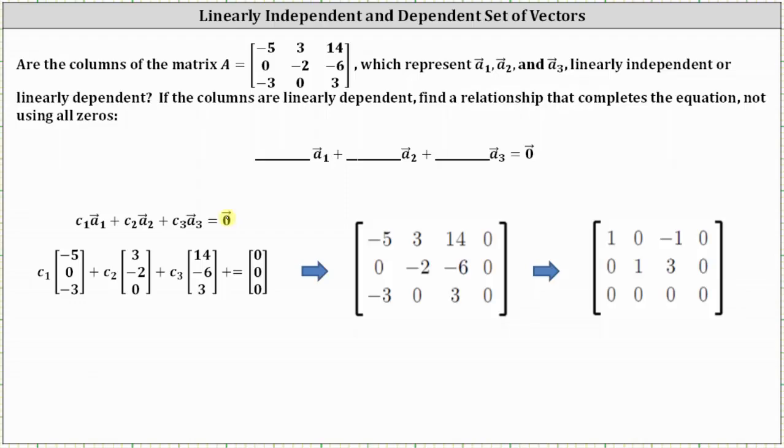But because we're given matrix A, we could simply go to the augmented matrix, where notice how matrix A gives us the first three columns of the augmented matrix, and the fourth column is a column of zeros.